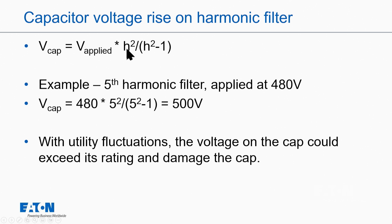In this example, if it's a fifth harmonic filter, it's just the voltage applied times the harmonic order you tune it to over the harmonic order squared minus one. So H squared over H squared minus one.